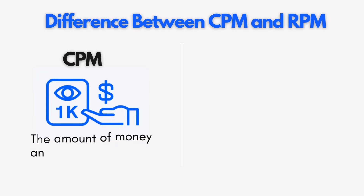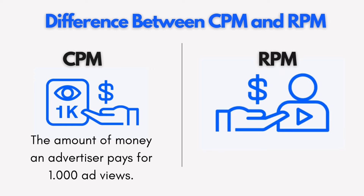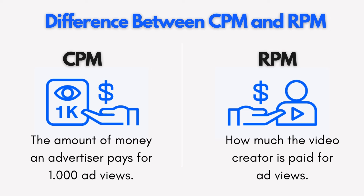CPM, or cost per mil, is essentially the price advertisers pay to have their ads displayed on your channel per 1,000 views. Think of it as the revenue your business generates before any expenses are deducted. On the flip side, RPM, or revenue per mil, is what you as the creator actually earn after YouTube takes its share.